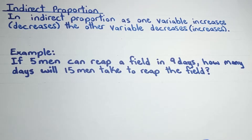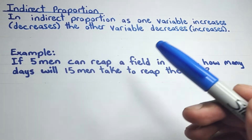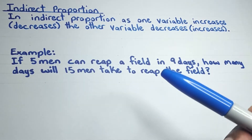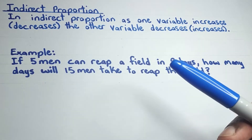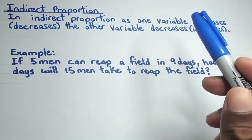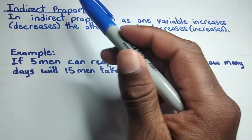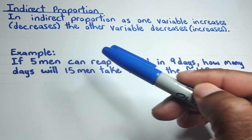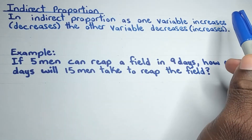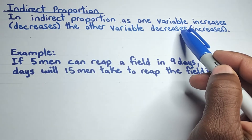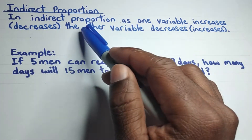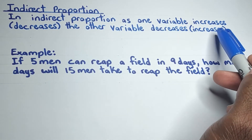As mentioned at the start of the video, we want to look at how to solve indirect proportional worded problems. But before we get into that, we first need to understand what indirect proportion is all about. In indirect proportion, as one variable increases, the other variable decreases — and the same is true in reverse.